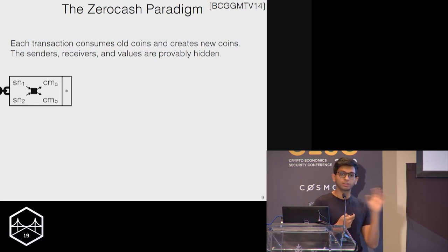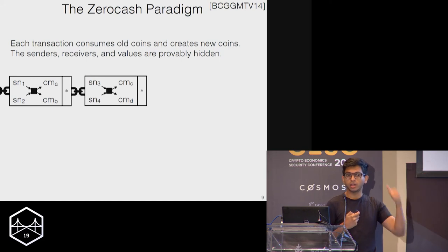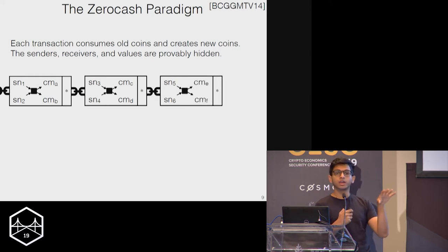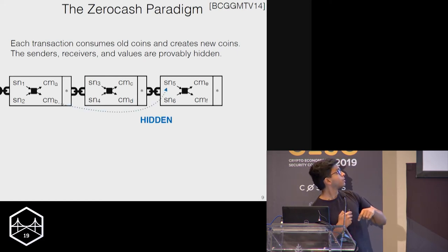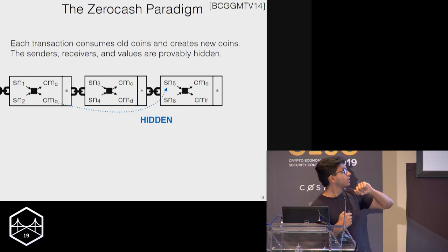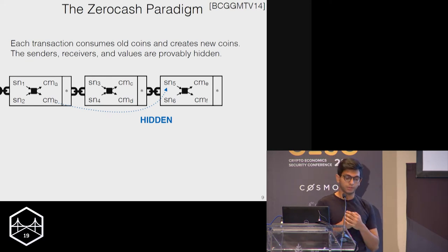In zero cash, each transaction consumes old coins and produces new ones. Within each transaction, you have serial numbers that correspond to the consumed coins and new coin commitments that correspond to the created coins. The property zero cash guarantees is that there's no way to link the transaction that created a coin with the transaction that spends it — so serial number five is in no way linkable to the commitment for that coin. You have an ideal privacy guarantee while ensuring value is conserved.